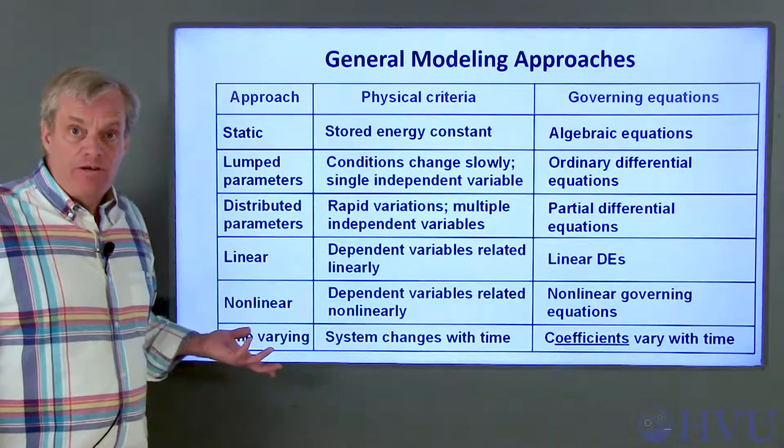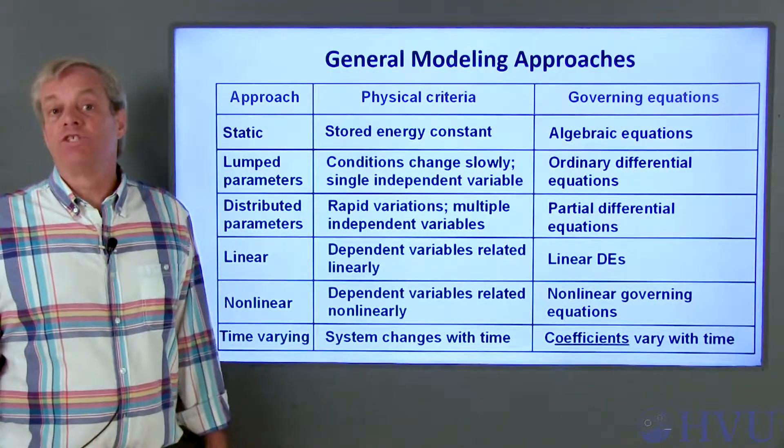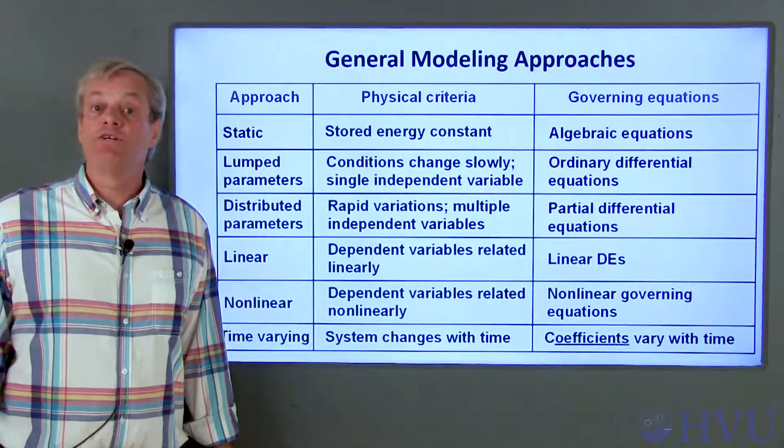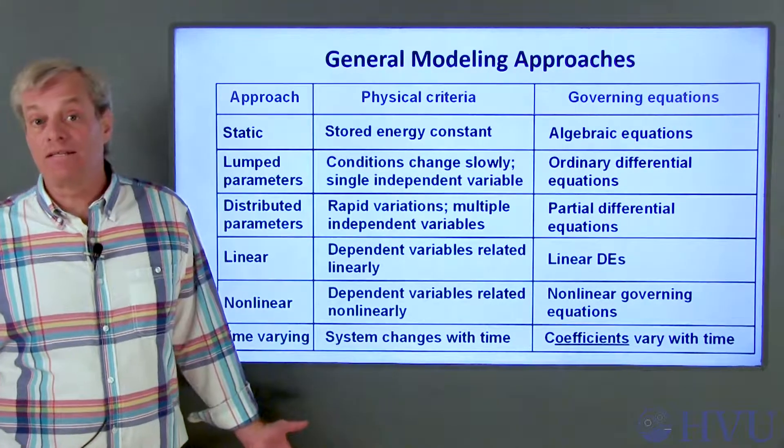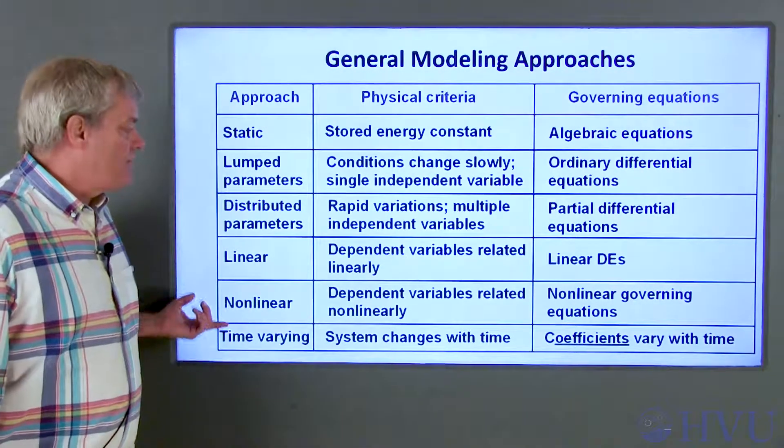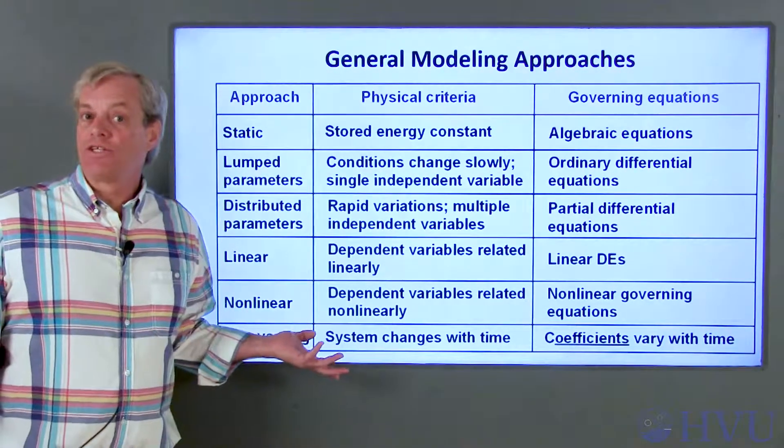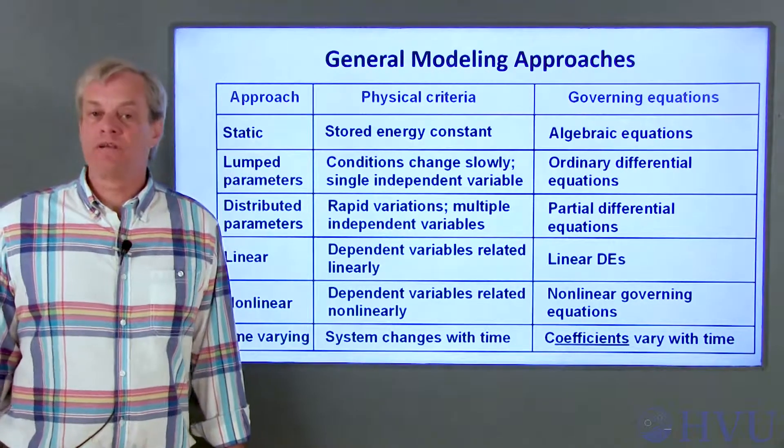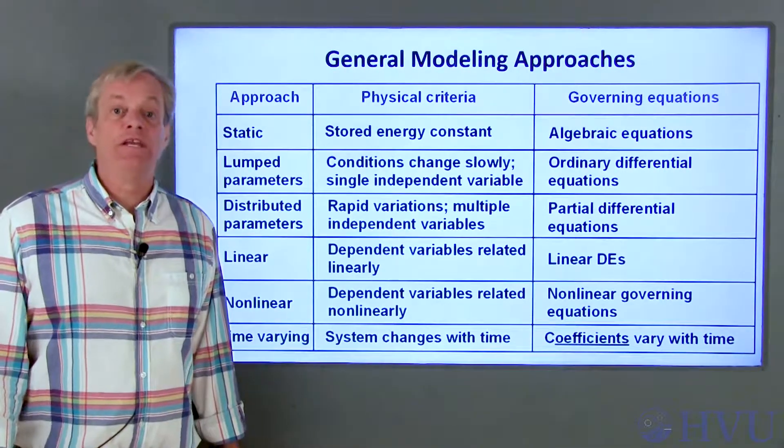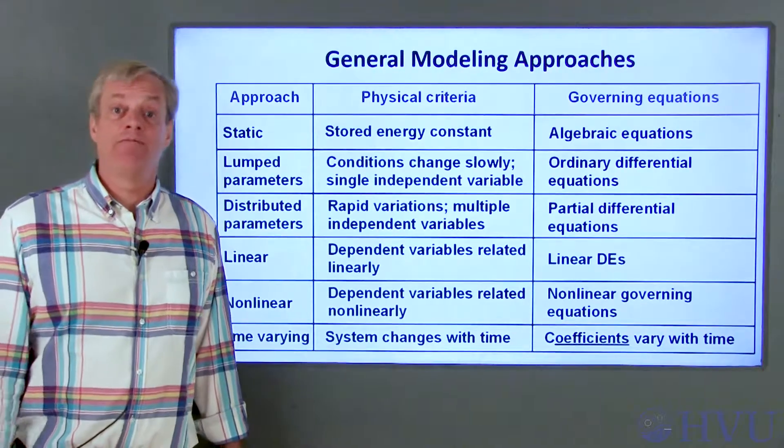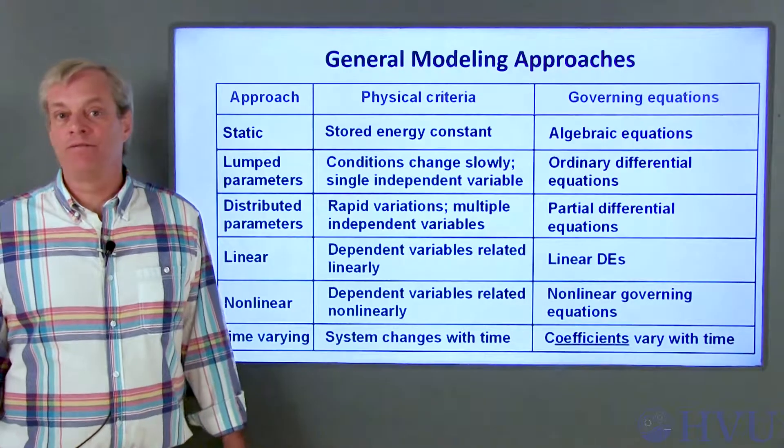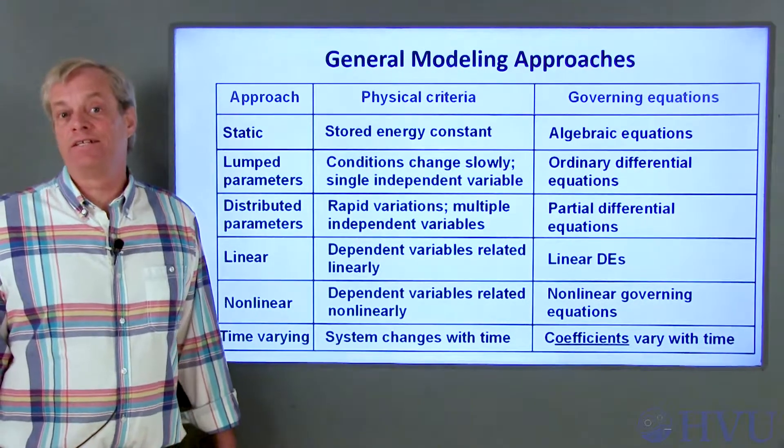One final category is time-varying systems. These types of systems change their behavior as a function of time, which means that the coefficients of the governing equations will be functions of time rather than constants. This also increases the factor of difficulty in analyzing a system. Most of these system types can be mixed and matched. A lumped parameters linear system model with constant coefficients won't be too difficult to deal with, but you really don't want to get stuck with a non-linear distributed parameter system with time-varying coefficients. If you end up having to deal with one of those, try to go on vacation or maybe pretend you're dead and hope it gets reassigned to someone else.